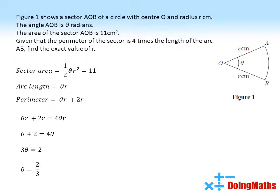Now if we put this into our formula for the sector area, we get a half times 2 thirds times R squared equals 11. This is the same as a third R squared equals 11, so R squared equals 33, and R equals root 33 centimeters.